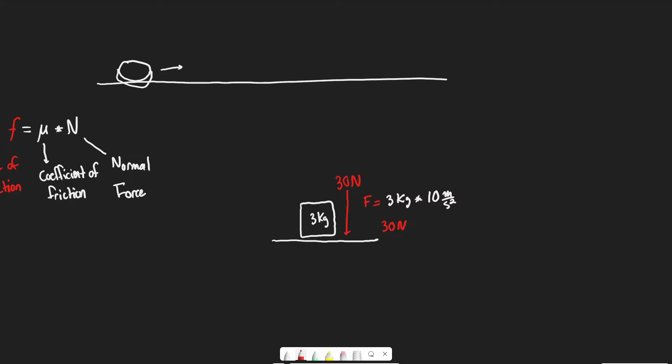But the block is not moving, which means there is an equal and upward force of 30 newtons acting on it. This is true for anything at rest experiencing gravity — there's a force equal and opposite, acting upward from the surface below. Otherwise the object would sink into the floor. That upward force is what we call the normal force.